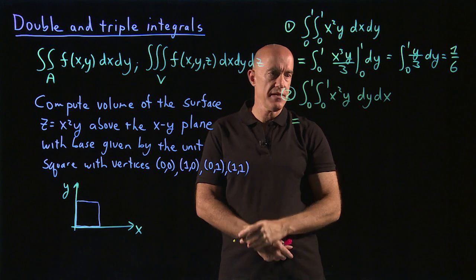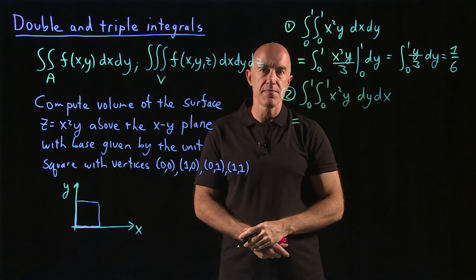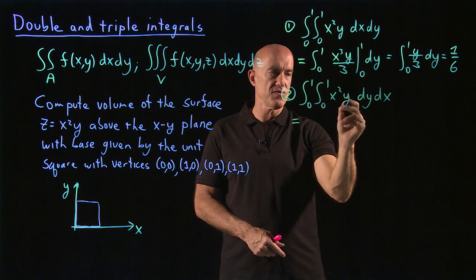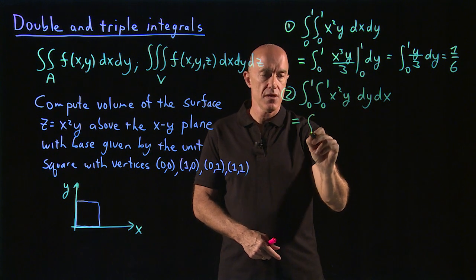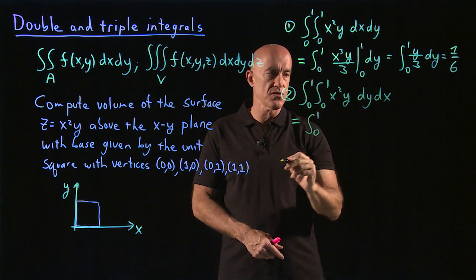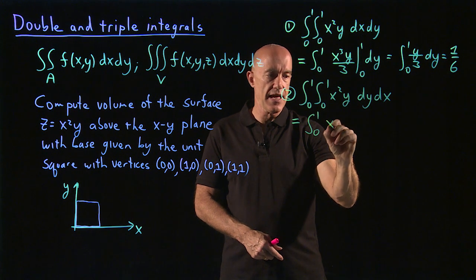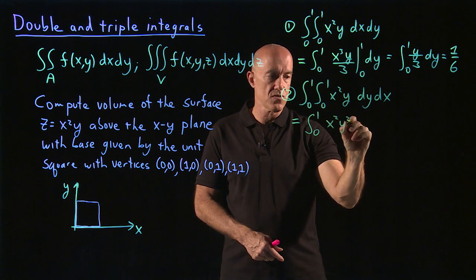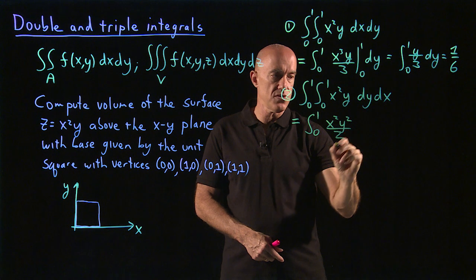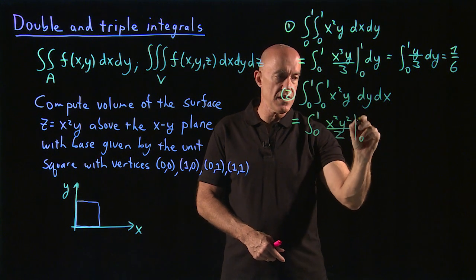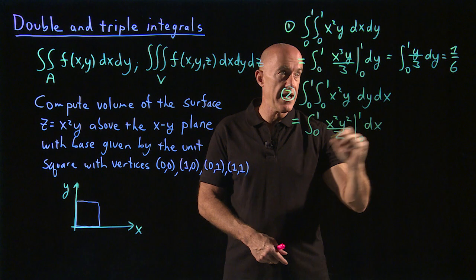What would this be? So now we integrate y first, keeping x fixed. So it becomes y squared over 2. So the outer integral is 0 to 1. And then we have x squared, y squared, divided by 2, between the limits 0 and 1, and dx.